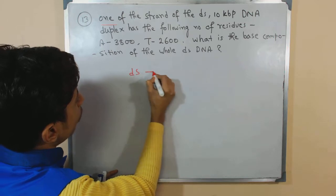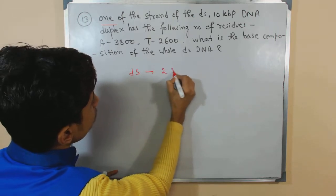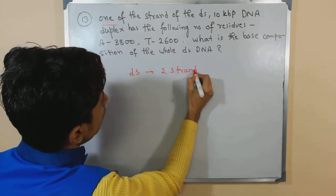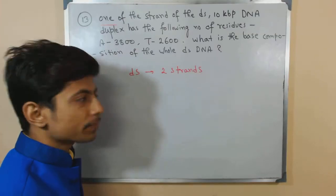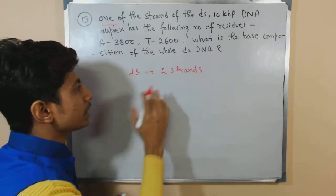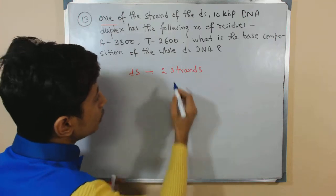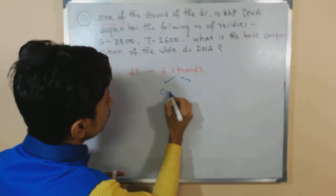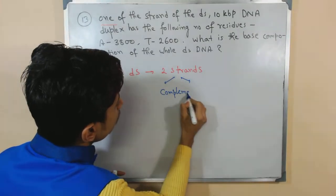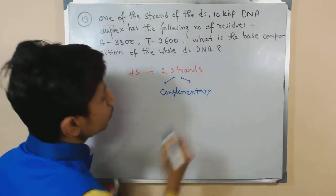Double-stranded DNA has two different strands, and both of those strands are complementary to each other.